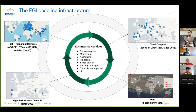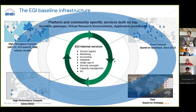EGI puts in place internal services that bring together capacity from across all the providers and present that to users. There is a registry for services — a database where all providers, services, and endpoints are registered. We have a monitoring dashboard to monitor the health of systems across the federation, accounting to account for usage, and a help desk where you can submit a ticket to any of the sites.